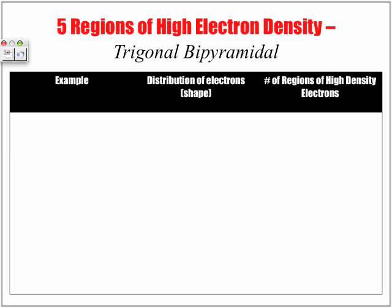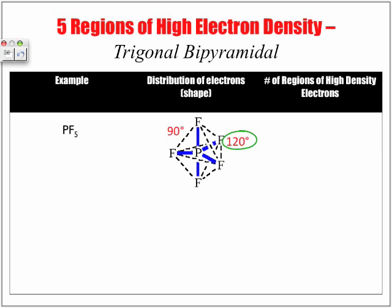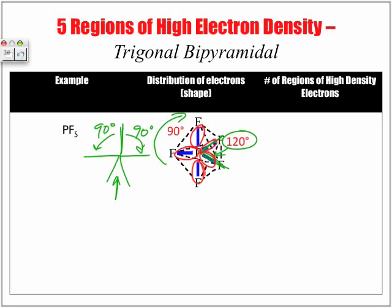Five regions of high electron density will constitute the shape of trigonal bipyramidal. Here's an example — we have PF5, with phosphorus as our central atom and five fluoride atoms surrounding it. Be really careful: we have 120 degrees for the bottom angle. Looking at it like a stick figure, the inner part of the legs is at 120 degrees, but between the body and the arms, that angle will be 90 degrees. So we have five bonded and zero unshared pairs, which gives us our trigonal bipyramidal.